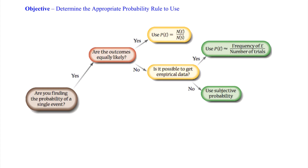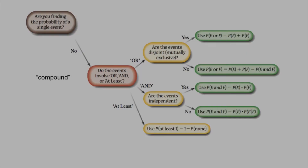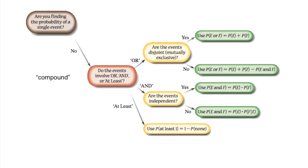You see the rest of the diagram, but just to encourage again, this is the thought process we want as we prepare for the exam. Moving to the bottom half of the page now — this is if we have compound events. A compound event means we're asked to find the probability of more than one thing occurring. If we recognize that we've got more than one single event being asked, the next question is: do the events involve OR, AND, or AT LEAST?